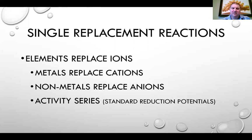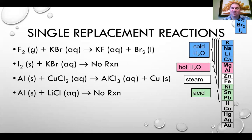In single replacement reactions, elements replace ions: metals replace cations and nonmetals replace anions. We figure out single replacement reactions by looking at something called an activity series, which is really based on standard reduction potentials. In the top right of the activity series are the halogens, and they go in the order in which they're listed on the periodic table.